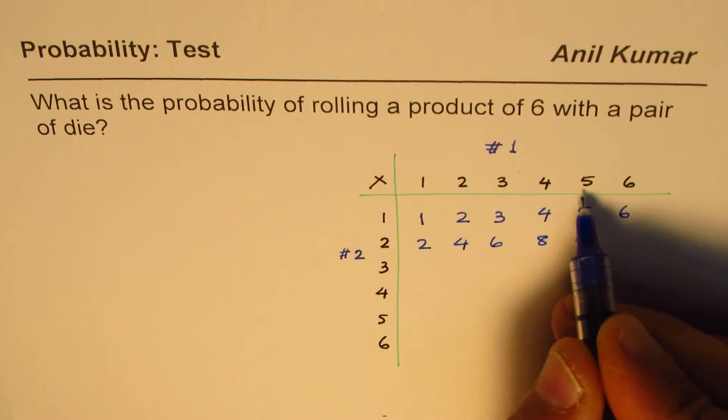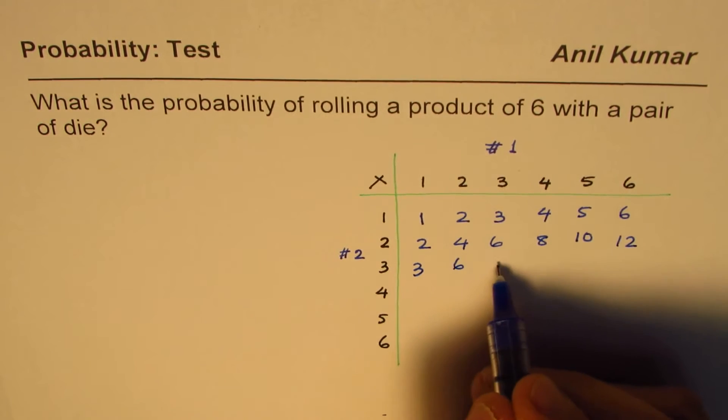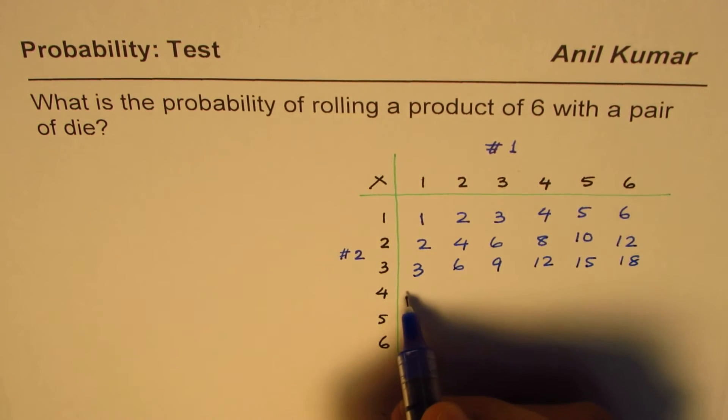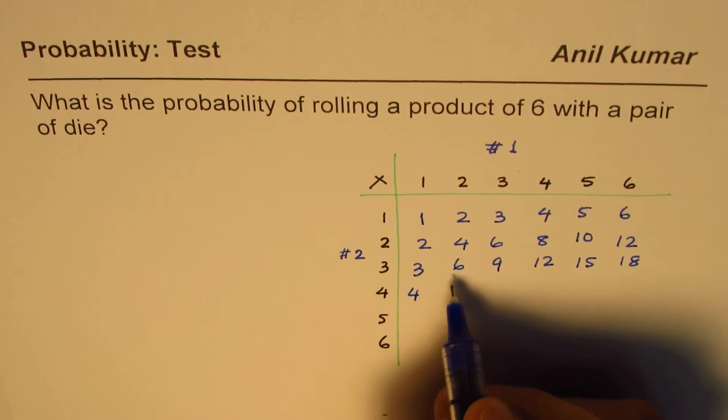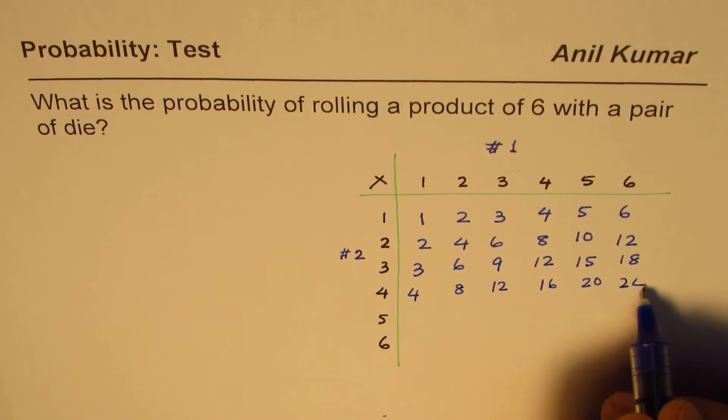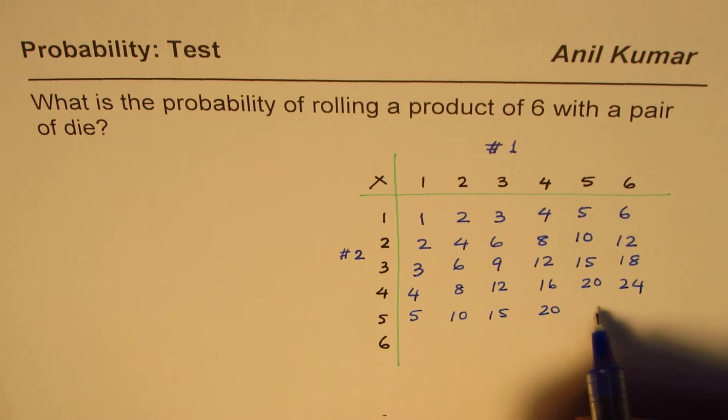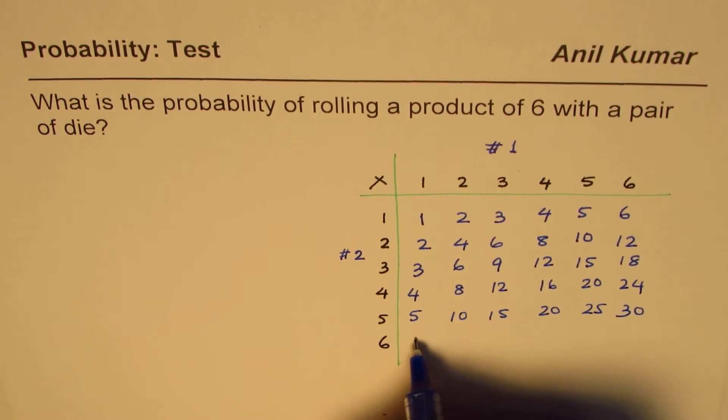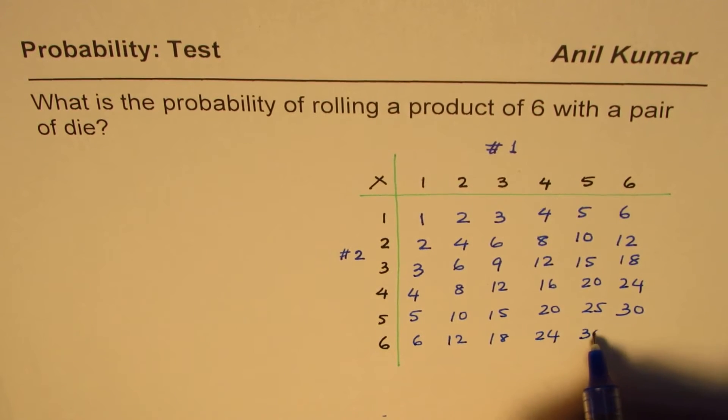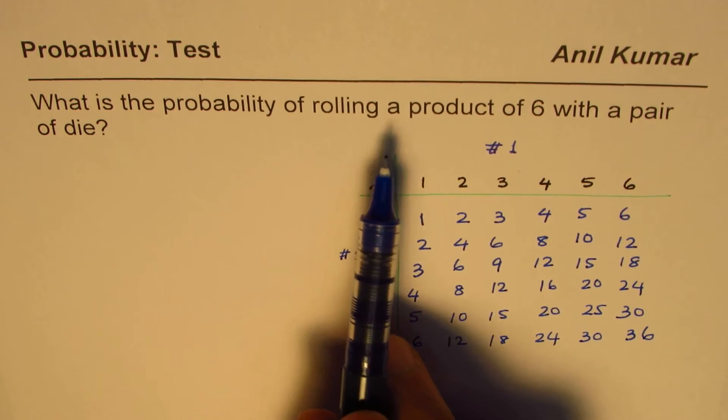3 times, so we get 3, 6, 9, 12, 15, and 18. 4 times, so keep on adding 4: 4, 8, 12, 16, 20, 24. 5 times: 5, 10, 15, 20, 25, and 30. 6 times: 6, 12, 18, 24, 30, and 36.